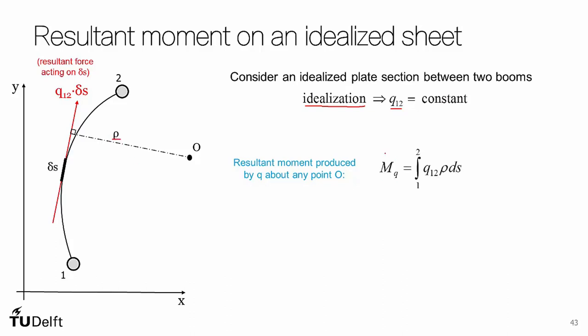So our moment due to Q about point O will be the integral from 1 to 2 of Q12 times this distance rho ds. And rho is going to be variable as we are at different points—the distance is actually changing.